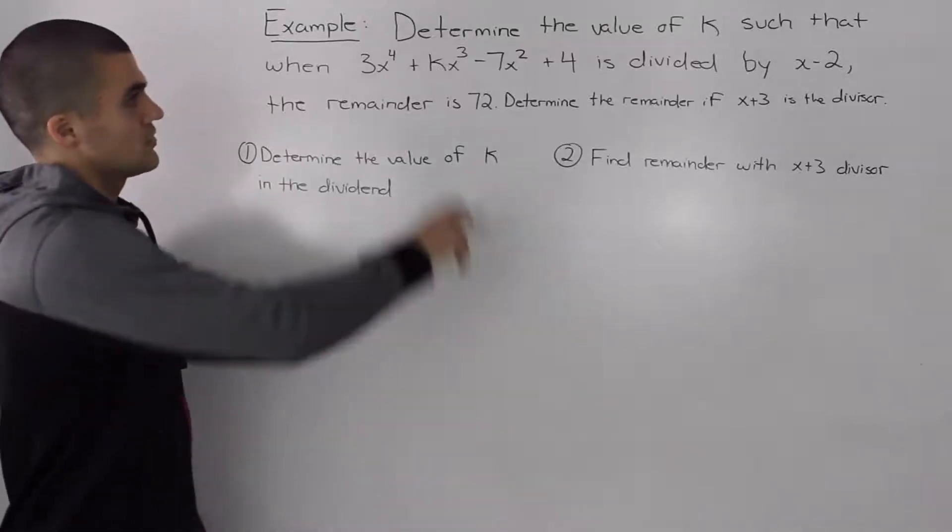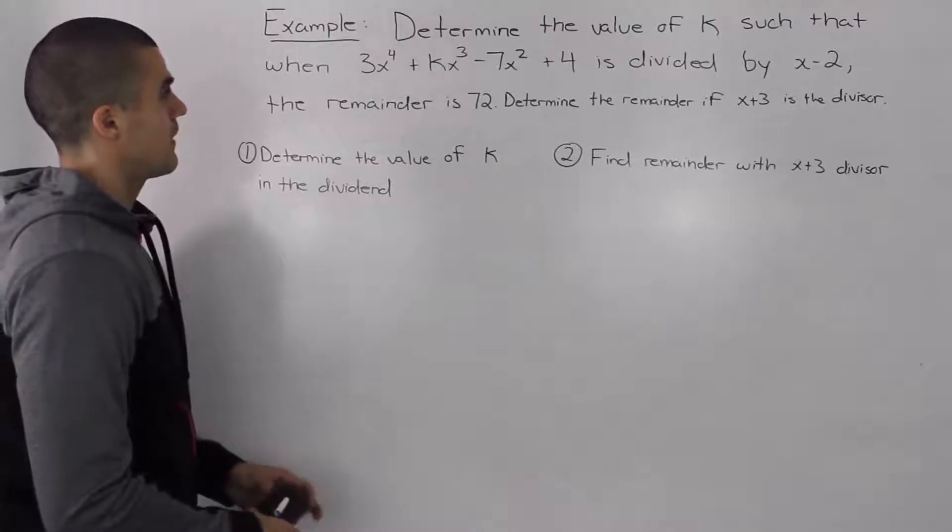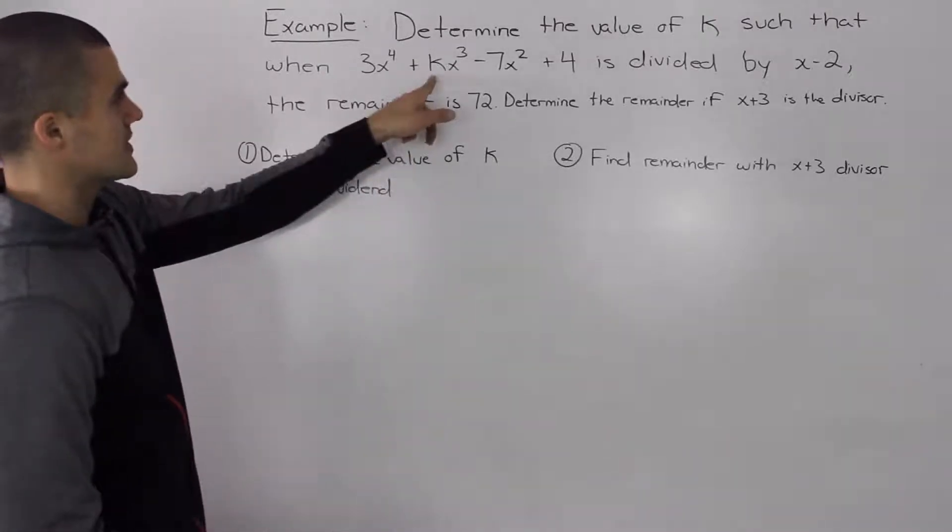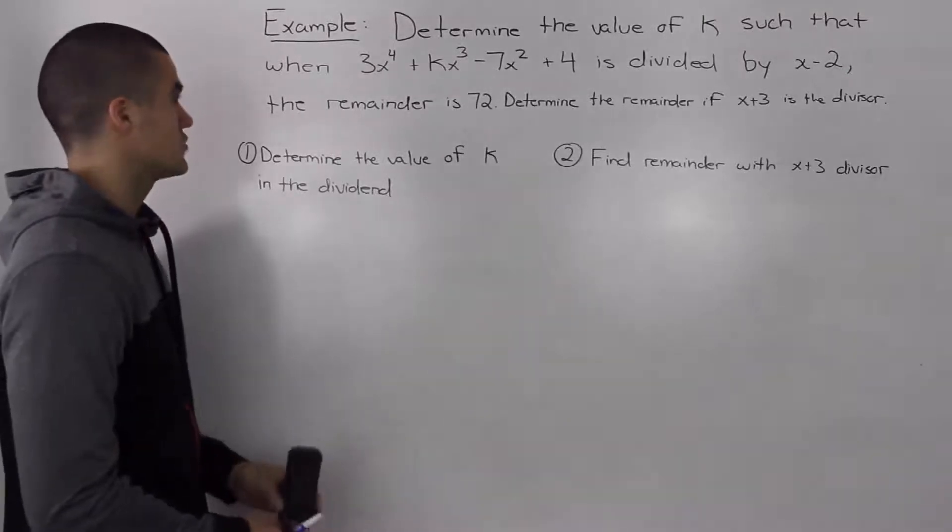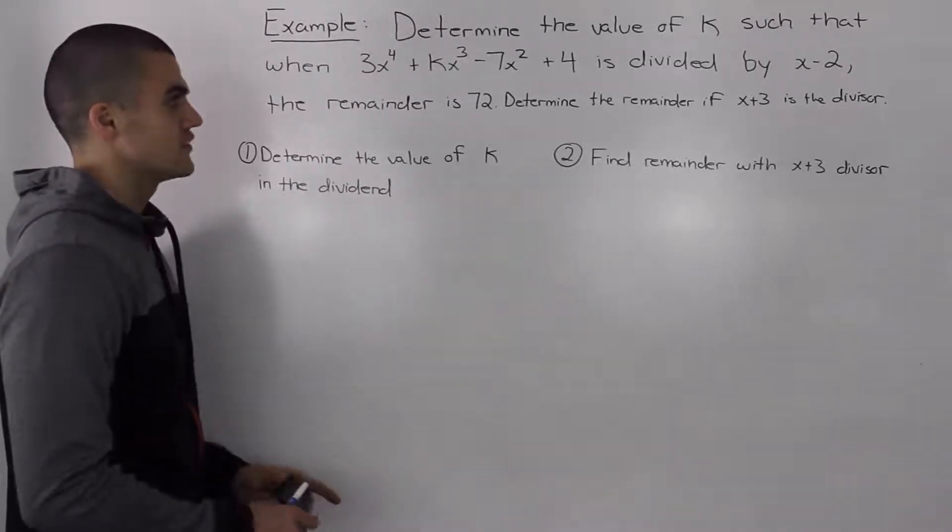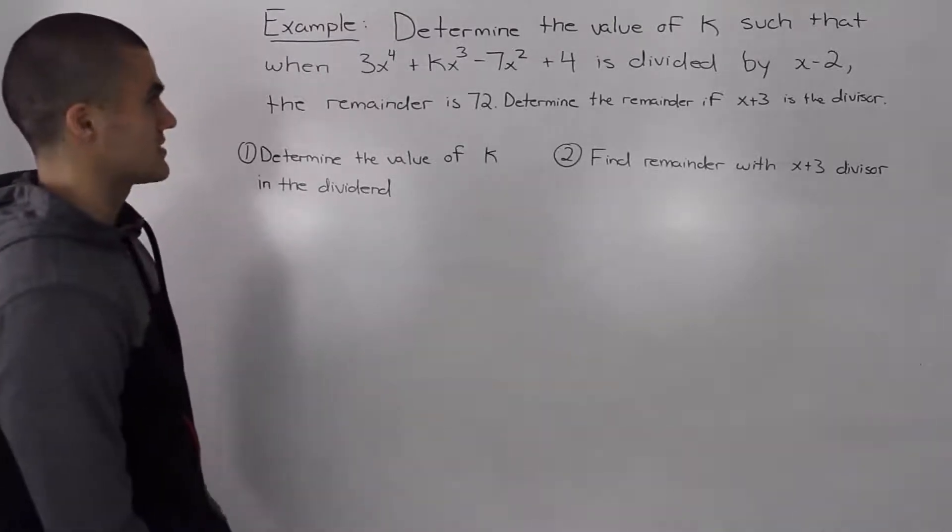So let's do an example here. Determine the value of k such that when 3x to the power of 4 plus kx to the 3 minus 7x squared plus 4 is divided by x minus 2, the remainder is 72. And then determine the remainder if x plus 3 is the divisor.